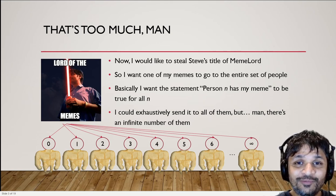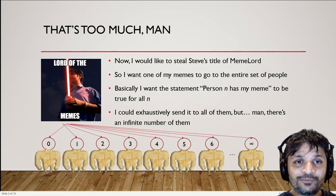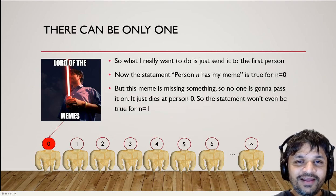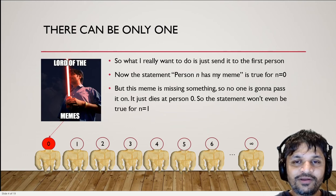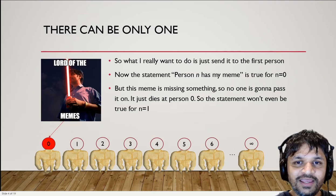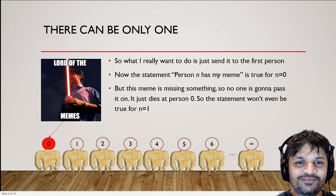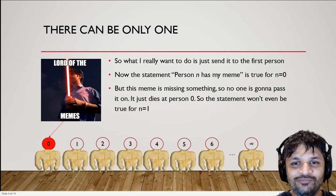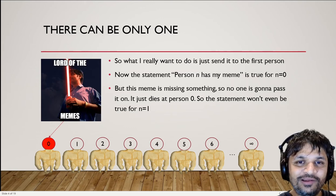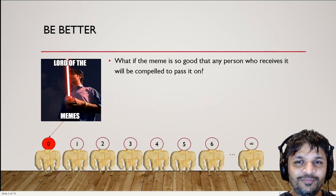You might say the most obvious strategy is to just send my meme to everybody, but there's an infinite number of people and I'm way too lazy to do an infinite amount of work. So what I want to do instead is just send it to the first person. Sending it to person 0 means the statement 'person n has my meme' is true for n equals 0. But that meme isn't particularly good, so it gets stuck — person 0 has it and won't pass it on. The statement won't even be true for n equals 1.